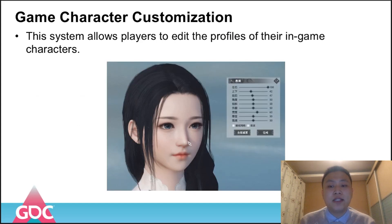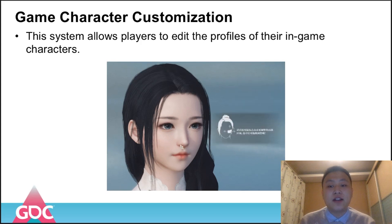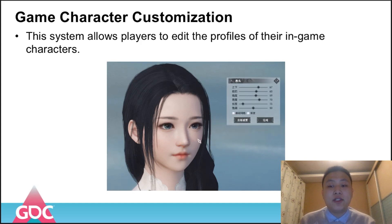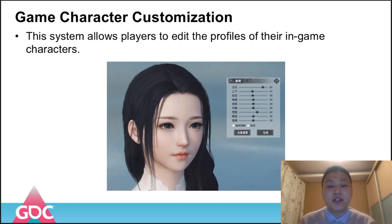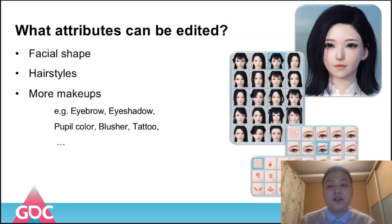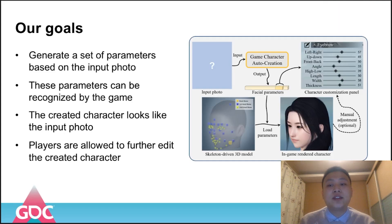Character customization system is a common system in recent RPGs. It allows players to edit the profiles of their in-game characters. For example, in the game Justice, players not only can adjust the facial shape by controllers, but also can choose various hairstyles and makeups for their characters. However, it is very time-consuming to create a perfect character with hundreds of parameters, especially when players hope to put themselves into the game. In this talk, we focus on the facial part and explain how to automatically create characters for our players.